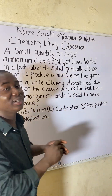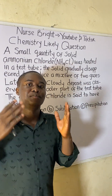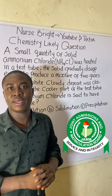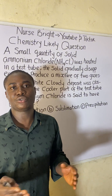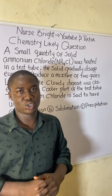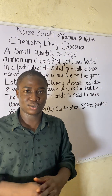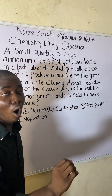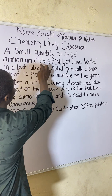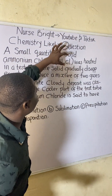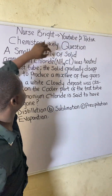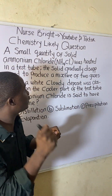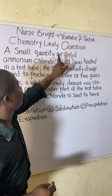If you came across this question in your chemistry exam - whether you are preparing for the JAMB/UTME examination or any other chemistry-related exams - how will you solve it? It is extremely easy. The question says: a small quantity of solid ammonium chloride, whose chemical formula is NH4Cl, was heated in a test tube.